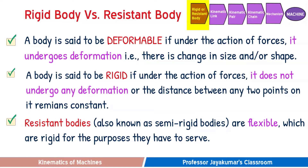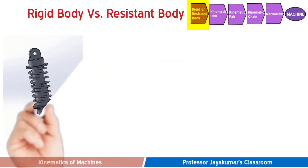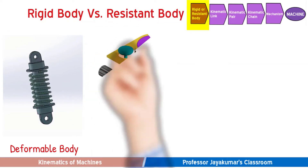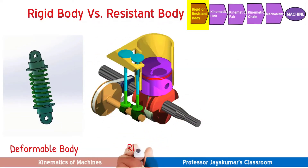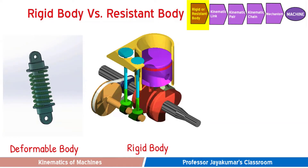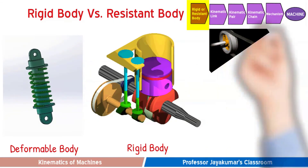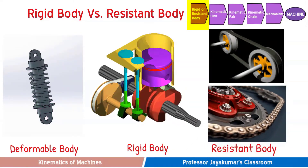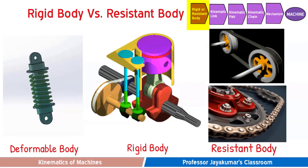Let us look at a few practical examples. The deflection of a beam or a spring when subjected to external forces are examples of deformable bodies. In an IC engine, the piston, connecting rod, crank, and cylinder are all examples of rigid bodies because they do not deform when external forces act on them. In belt and chain drives, the belt and chain deform considerably while transmitting motion, but the deformation has no effect on the transmission of motion, so they are examples of resistant bodies.